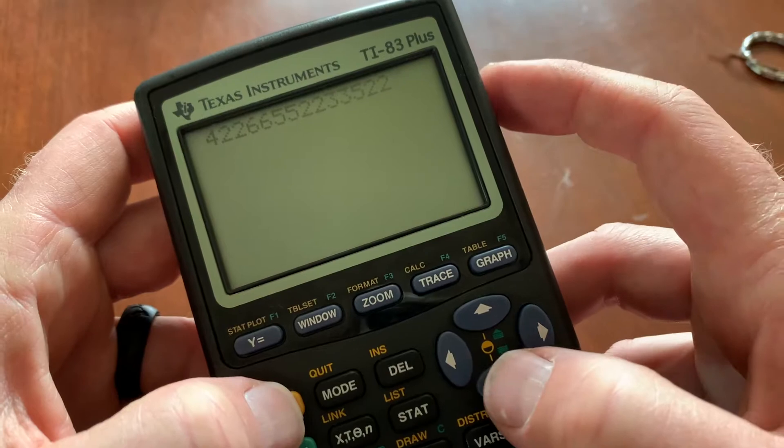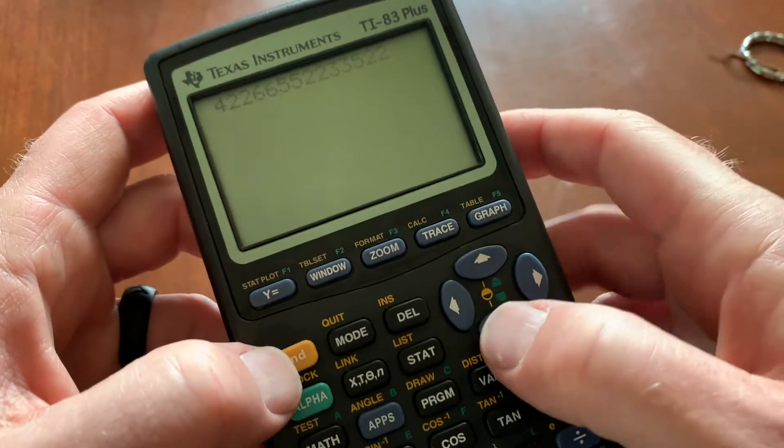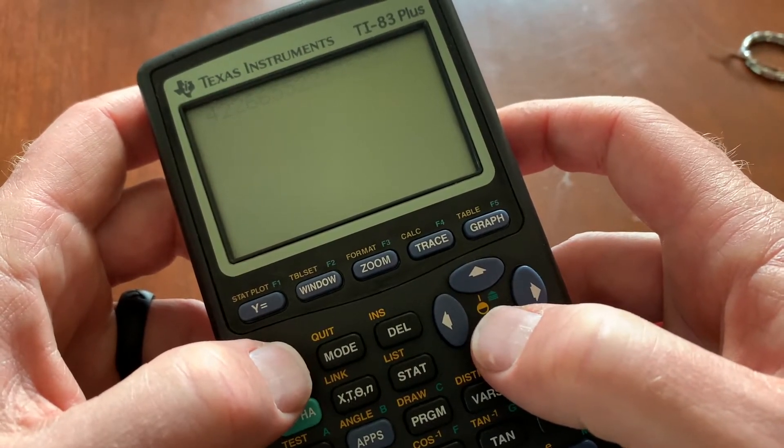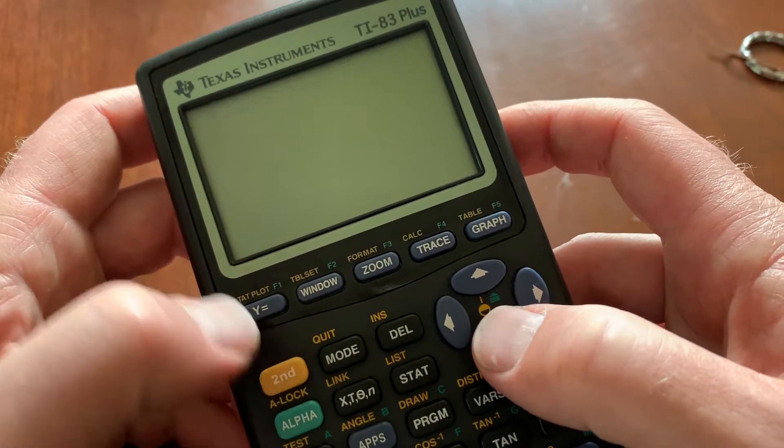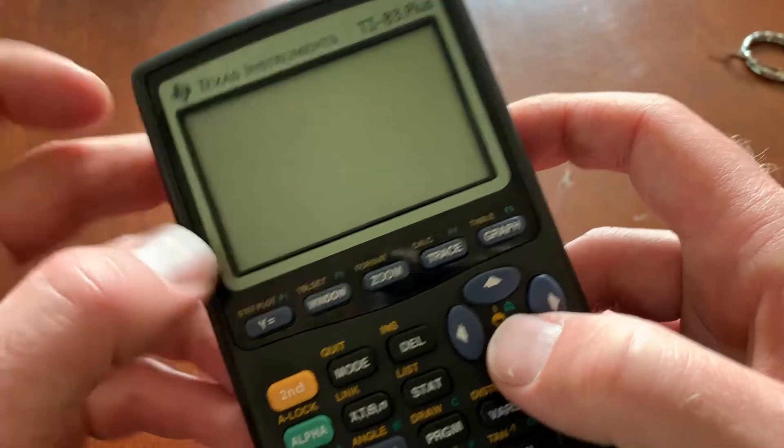You can just kind of barely see it. But as you can see, the numbers are starting to get lighter and lighter. The more I do this, the more it goes down until finally you can barely even see the numbers at all.